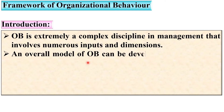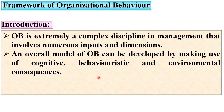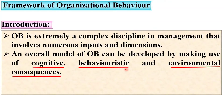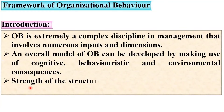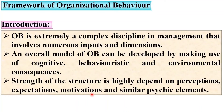An overall model of OB can be developed by making use of cognitive, behavioristic, and environmental consequences. Basically, a framework of organizational behavior is based on these three parameters: cognitive, behavioristic, and environmental consequences. The strength of the structure is highly dependent on perceptions, expectations, motivations, and similar psychic elements.